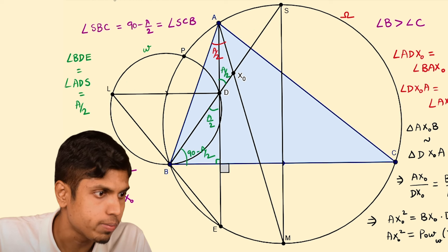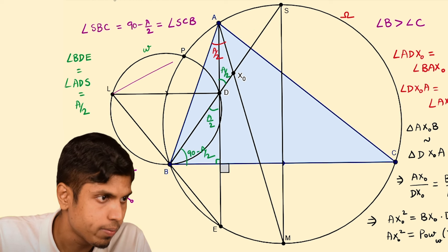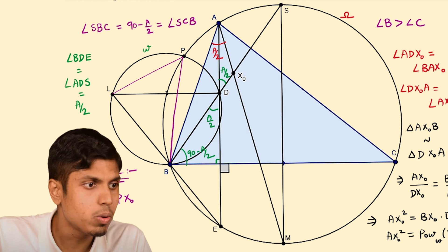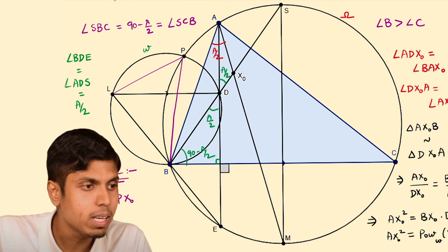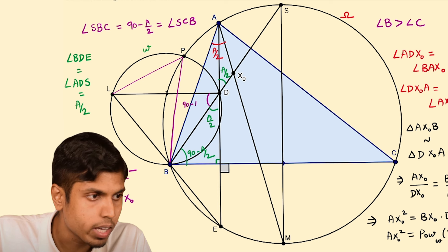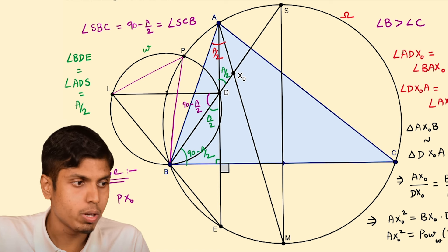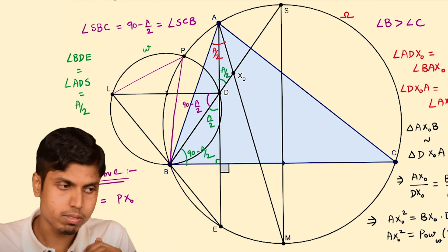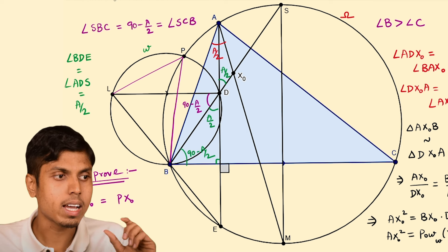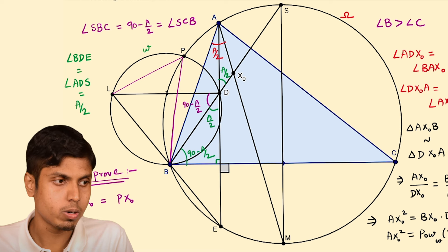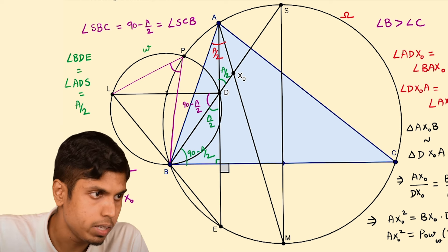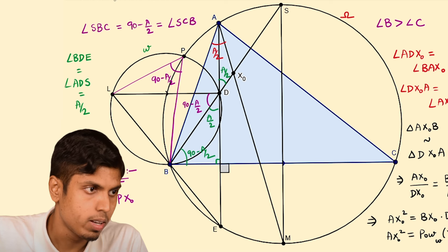If we consider angle LPB, it equals angle LDB by the inscribed angle theorem. But angle LDB equals 90 minus A/2 because LD is parallel to BC and BD is the transversal, making angle LDB equal to angle SBC, which is 90 minus A/2. Hence angle LPB is also 90 minus A/2.